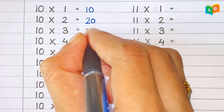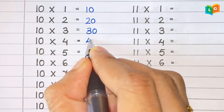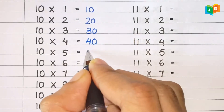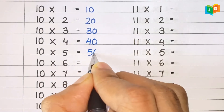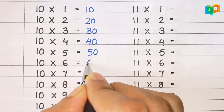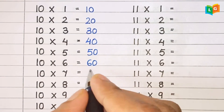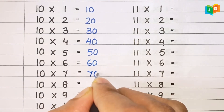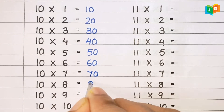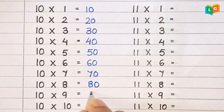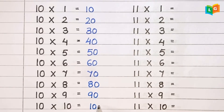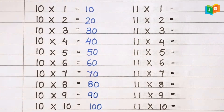Now let's see table of 10. 10 1s are 10, 10 2s are 20, 10 3s are 30, 10 4s are 40, 10 5s are 50, 10 6s are 60, 10 7s are 70, 10 8s are 80, 10 9s are 90 and 10 10s are 100.